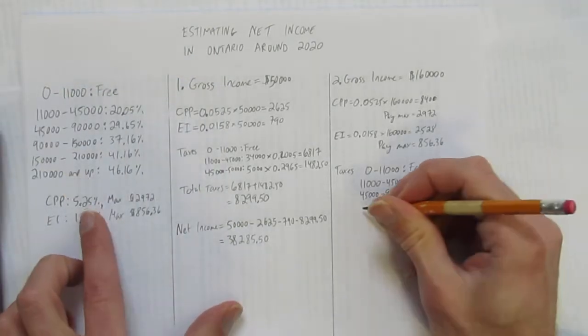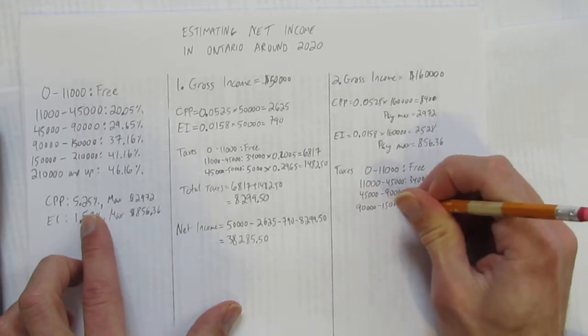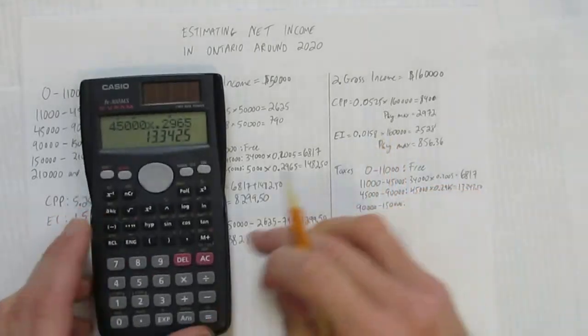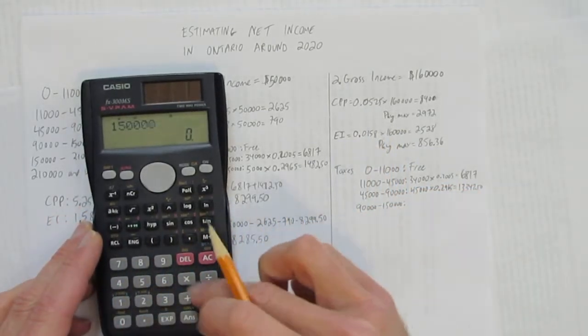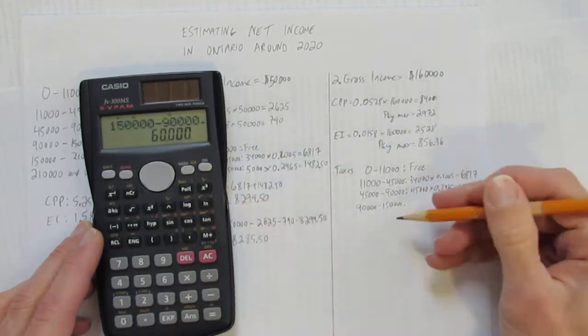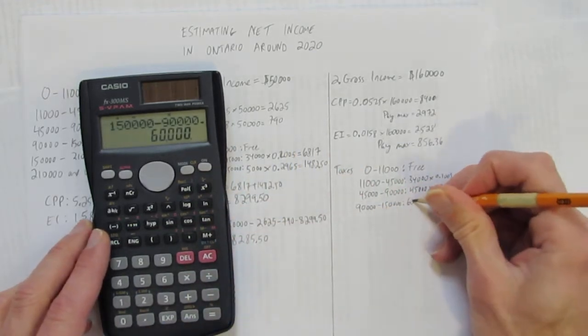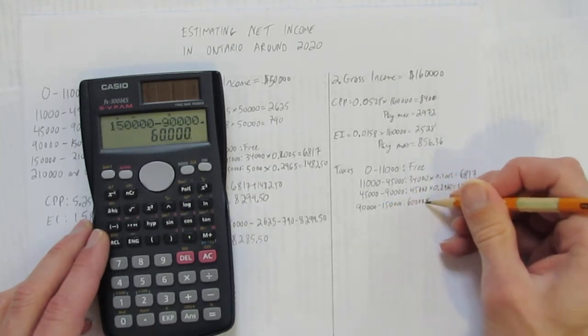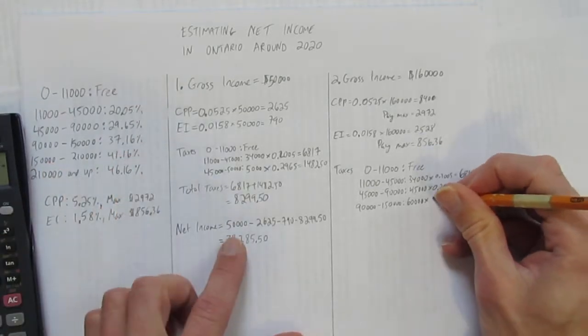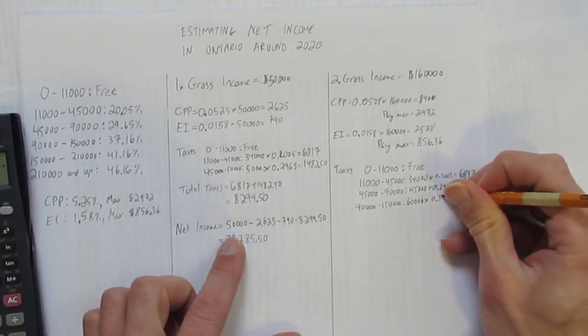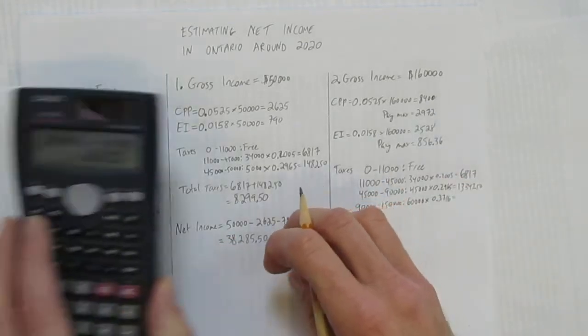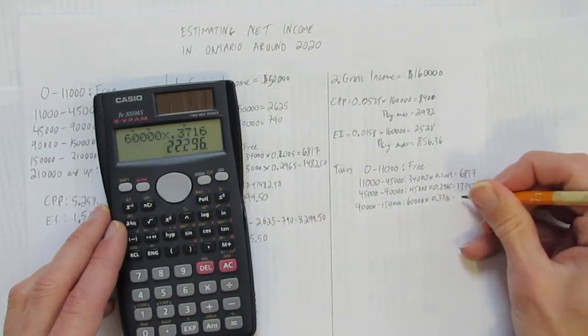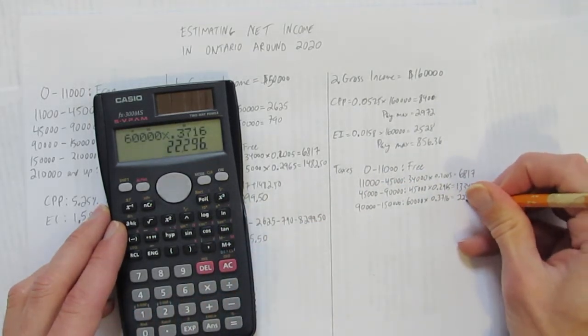What about the next bracket, which is $90,000 to $150,000? In this bracket, how much money is between $90,000 and $150,000? There are $60,000 in that bracket, and all of those dollars get taxed at 37.16% as a decimal, 0.3716. $60,000 times 0.3716, and you get $22,296.